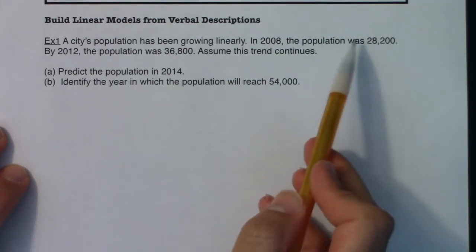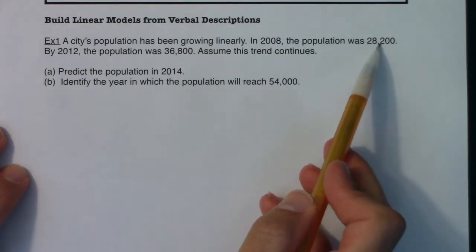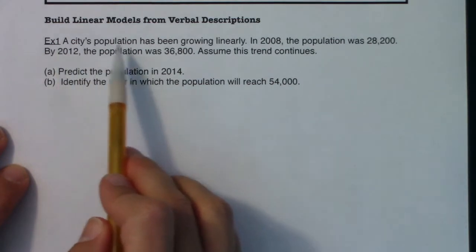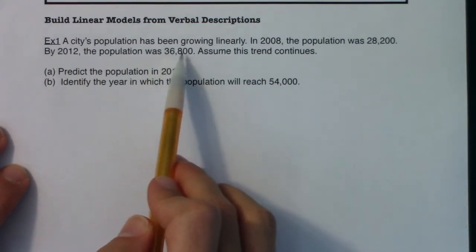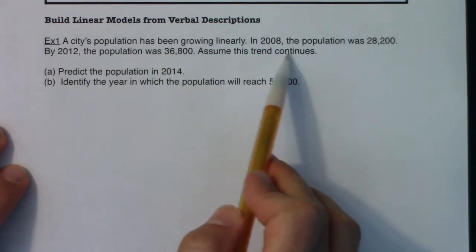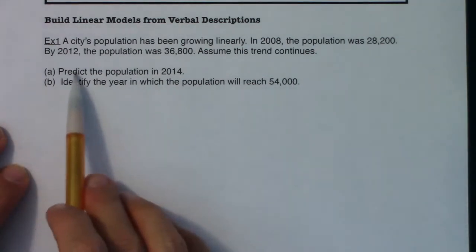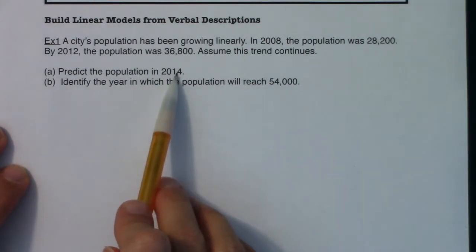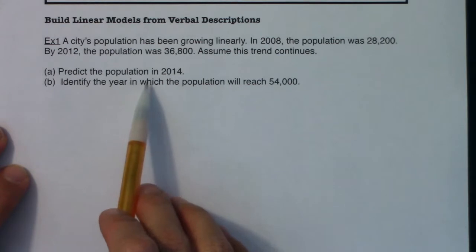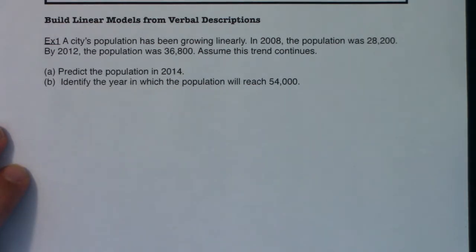Or we could say identify the input and output values. So a city's population has been growing linearly. In 2008, the population was 28,200. By 2012, the population was 36,800. Assume this trend continues. Predict the population in 2014 and identify the year in which the population will reach 54,000.